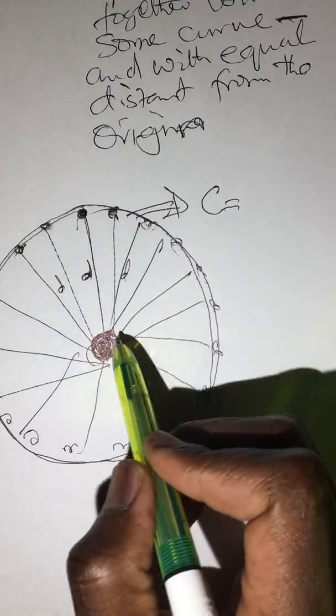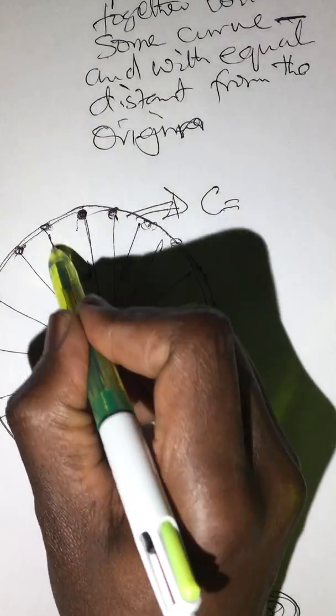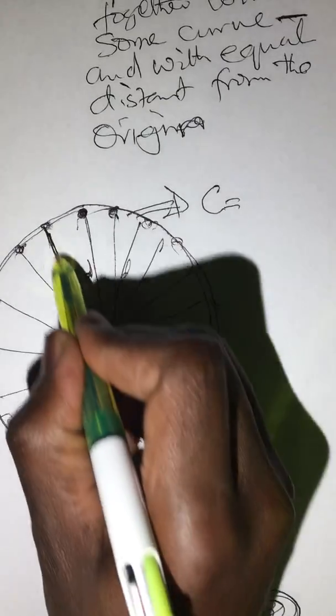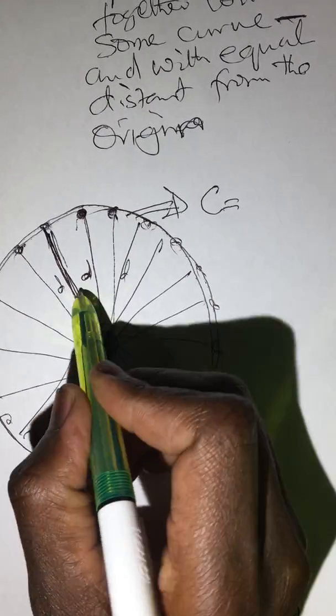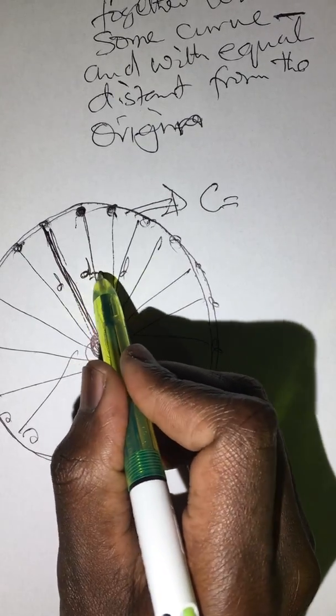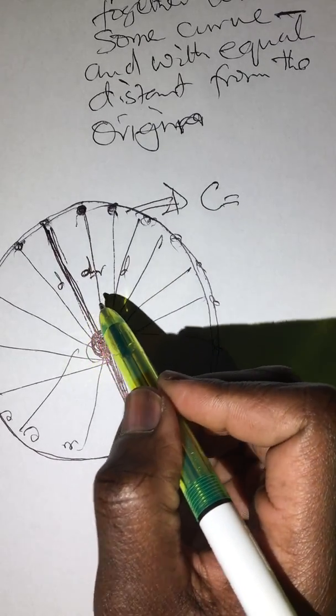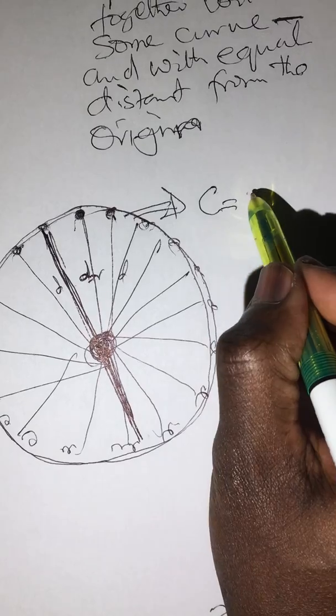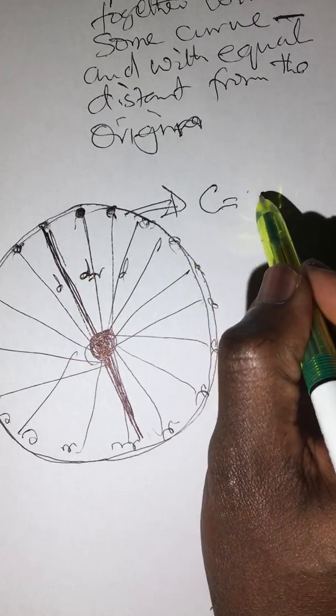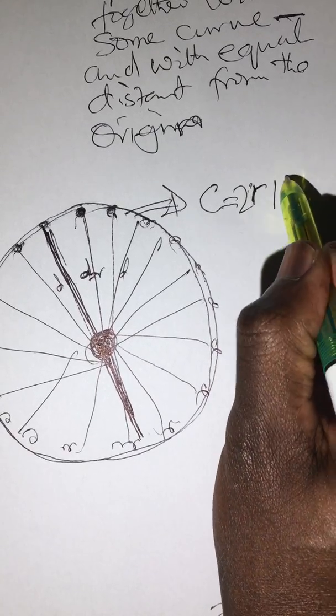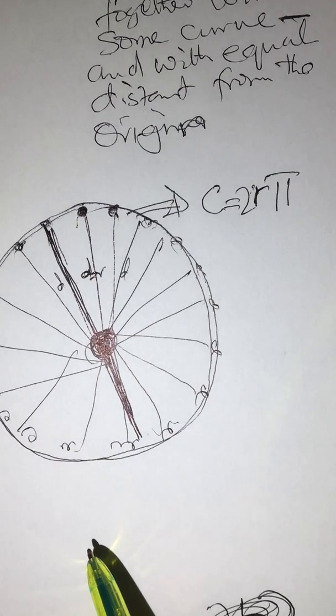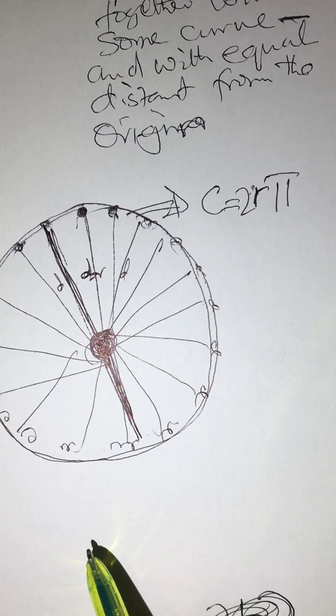which is equal to the product of its distance, which is the radius. The distance is modeled as the radius. The product of twice the radius of the circle times pi.